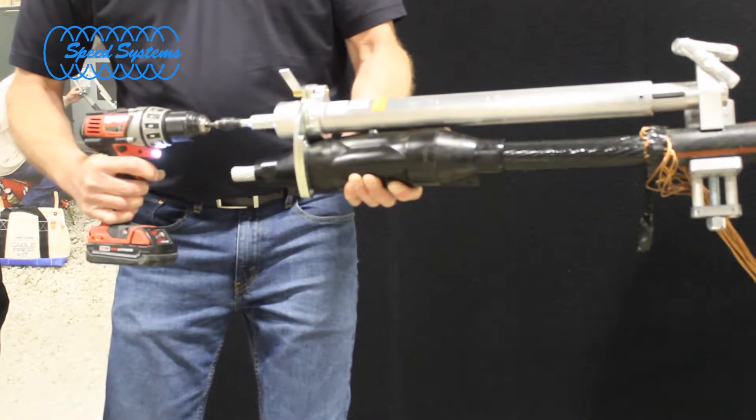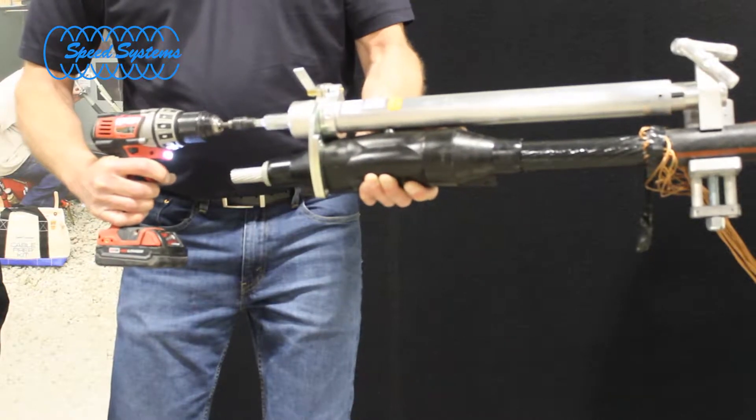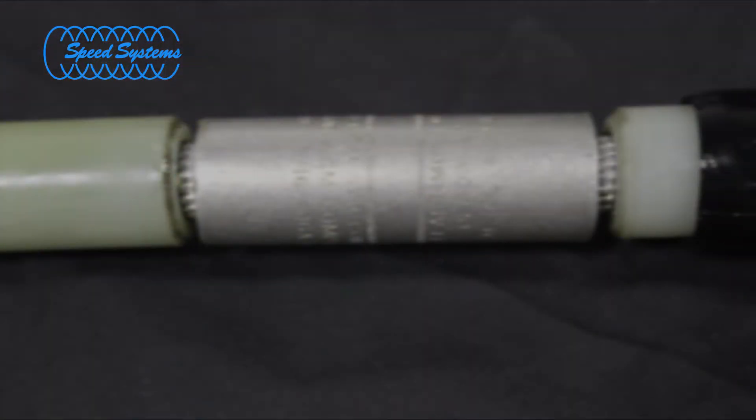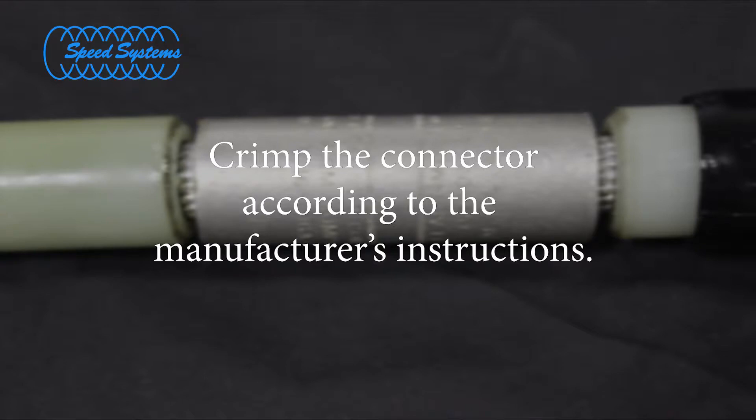Take care to keep the splice and cable aligned as the splice body is drawn onto the cable. Complete the installation of the crimp connector following the component manufacturer's instructions.